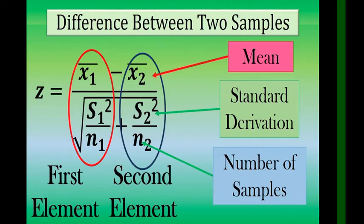The formula for difference between two sample means is Z equals x̄1 minus x̄2 over the square root of s1² over n1 plus s2² over n2. The numbers with subscript 1 are the first element, and letters with subscript 2 are the second elements.